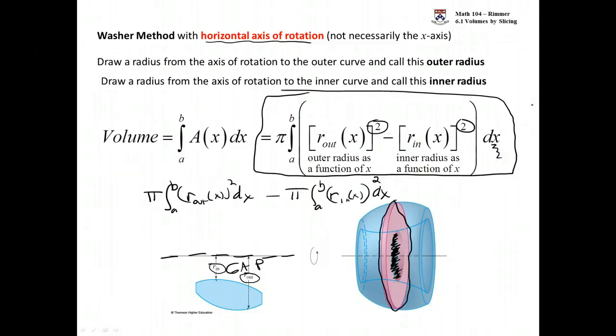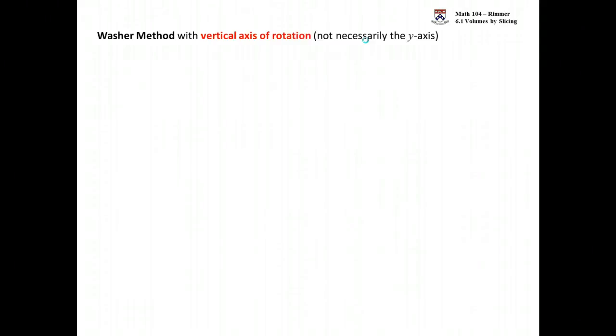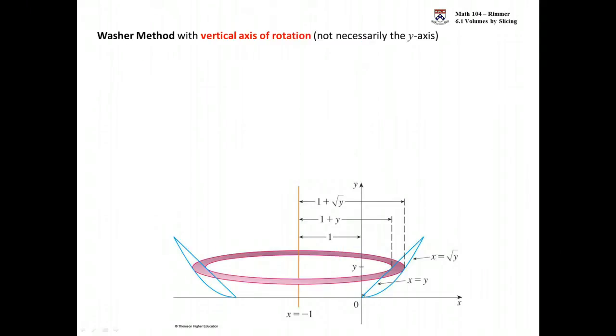But then when your axis flips and becomes vertical, then you'll be in terms of y. Back to that picture again where we have this region. And my axis, not the y-axis, but another vertical line. Because there is this gap, we're going to have to use washer method.